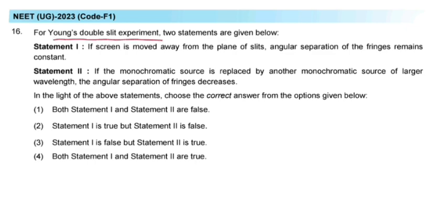In Young's double slit experiment, angular fringe width alpha is given by the formula lambda divided by d, where lambda is wavelength of light used and d is distance between the two slits.